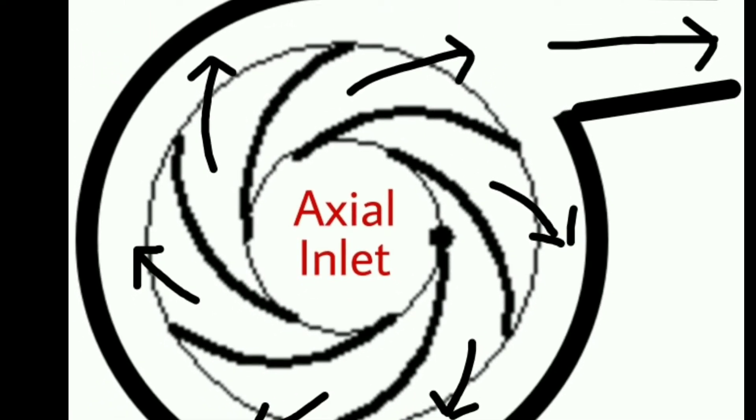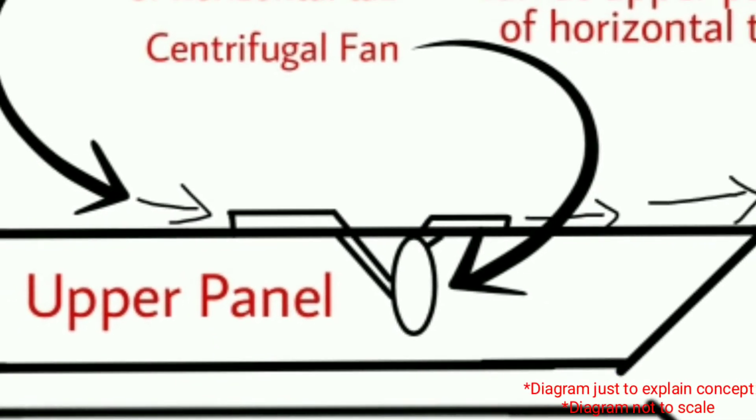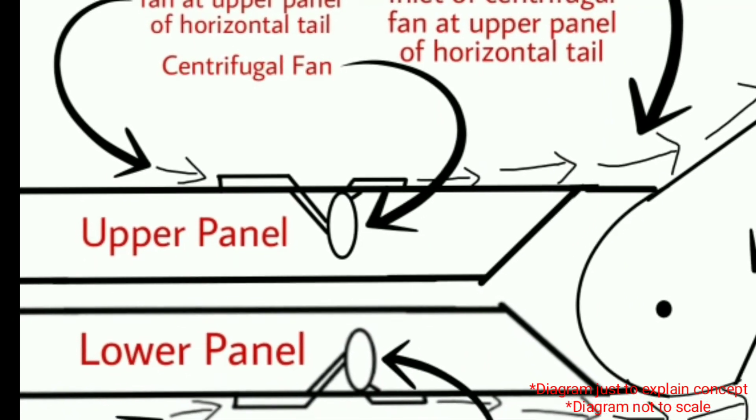This customized panel will consist of small centrifugal fans. These small fans will be activated once pressure disturbance is detected by the pressure sensors. Fan rotation speed can be controlled by microcontroller.